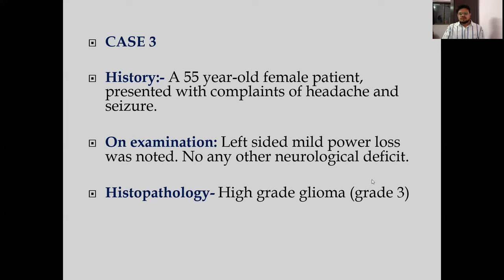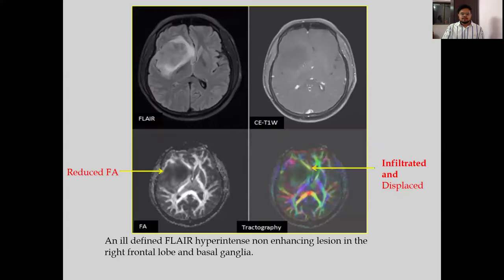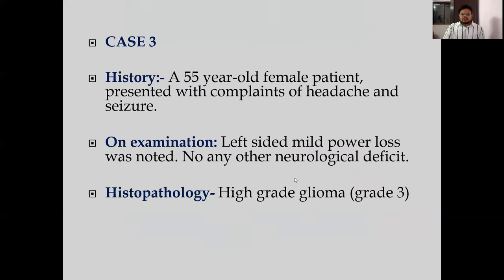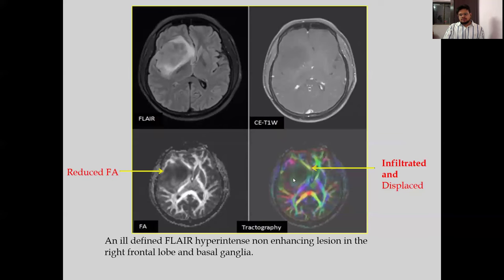Case 3: a 55-year-old female presented with headache and seizure. There was left-sided mild power loss on examination with no other neurological deficit. Imaging revealed an ill-defined FLAIR hyperintense, non-enhancing lesion in the right frontal lobe and basal ganglia. There was reduction in fractional anisotropy, and on tractography we can see there is infiltration and displacement of white matter tracts. Histopathology revealed it was a high-grade glioma.